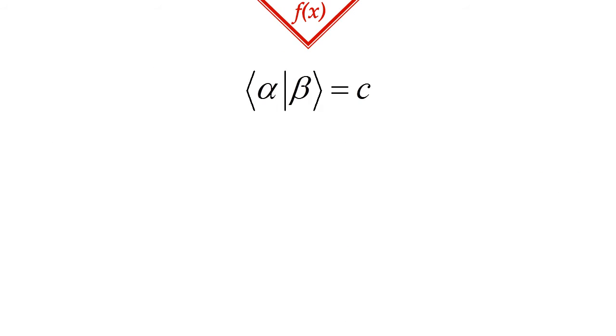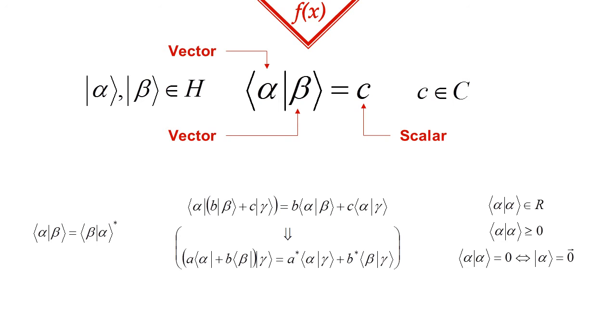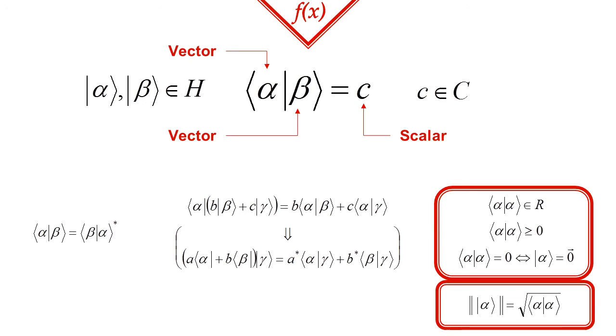The inner product is an operation that maps a pair of vectors onto the complex numbers. It has several useful qualities. For example, the inner product of a vector with itself must be real, non-negative, and it can only be zero if the vector itself is the zero vector. These qualities make it possible for us to define the length of a vector using the inner product.